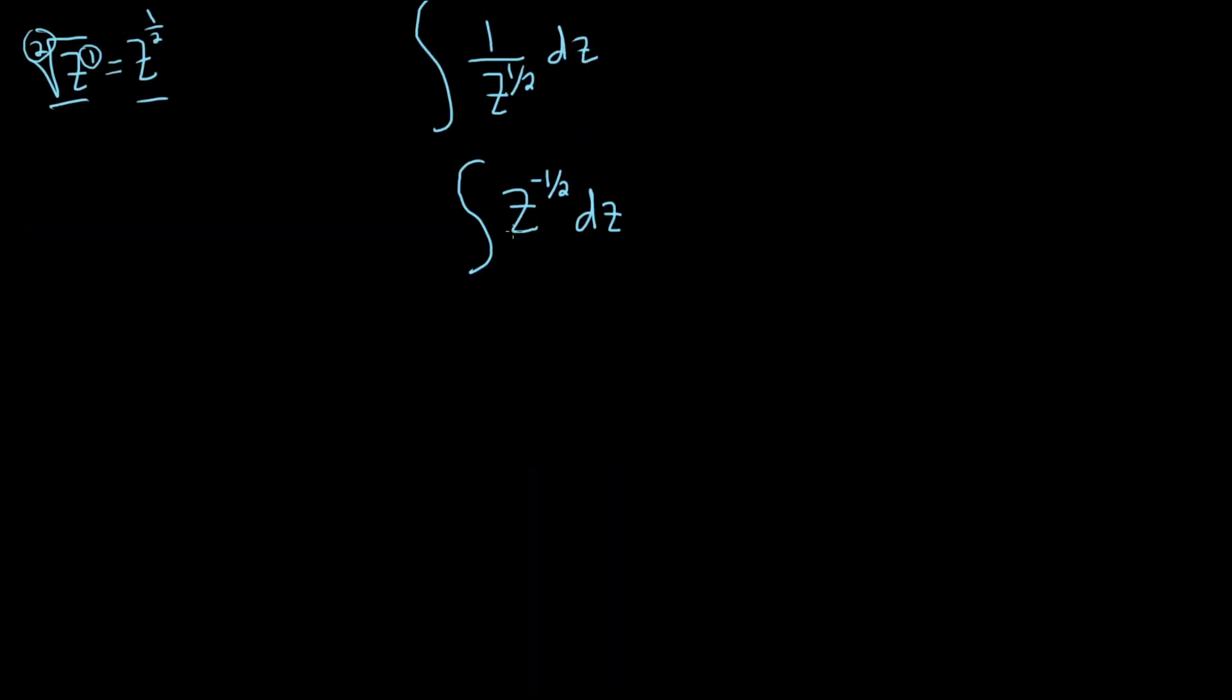So the power rule basically says that we just take this number and we add 1. So negative 1 half plus 1, that's the same thing as negative 1 half plus 2 halves. And then you add the negative 1 and the 2, and you get 1 half.